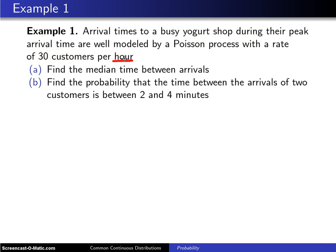I'll underline the word hour there. Find the median time between arrivals, and find the probability that the time between arrivals of two customers is between two and four minutes.